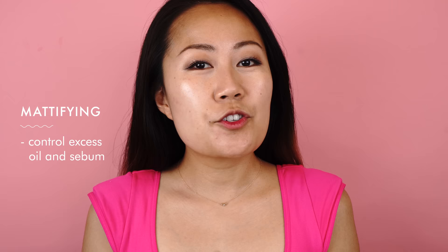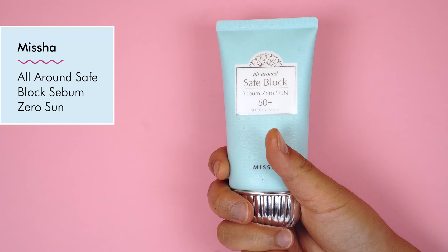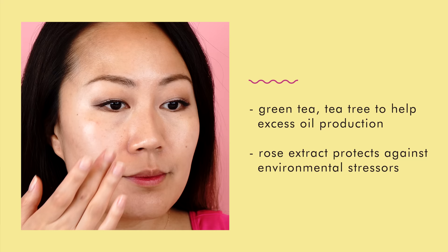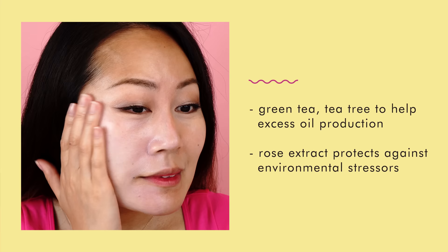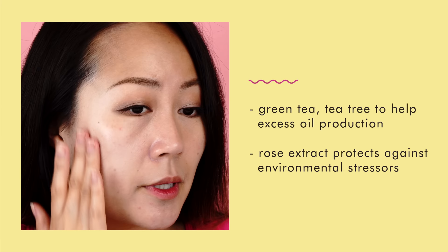If you want to control excess oil and sebum, you want to look for a mattifying sunscreen. This Missha sunscreen features green tea and tea tree extract to help control oil production without drying out your skin. It also contains rose extracts to help protect against environmental stressors. Note that this sunscreen does leave a slight white cast, so you want to spend time blending it in thoroughly.